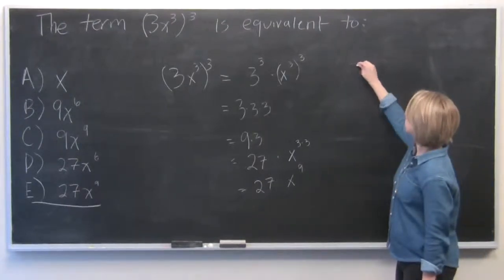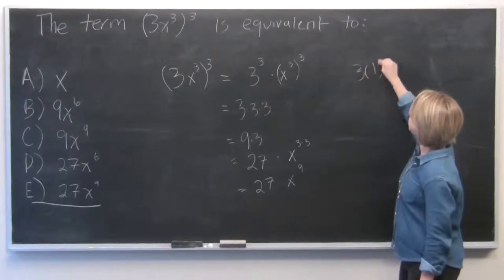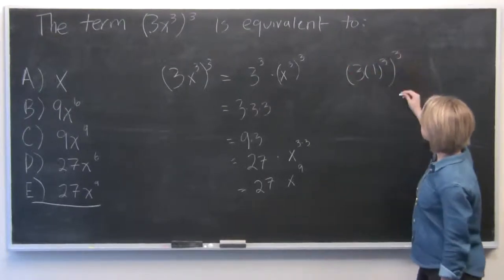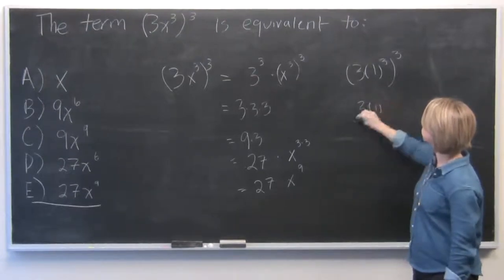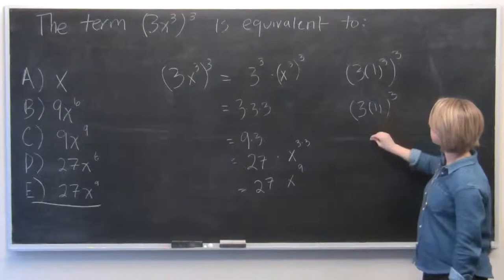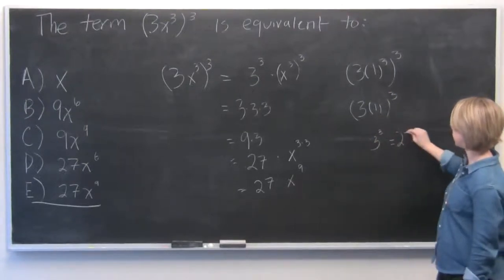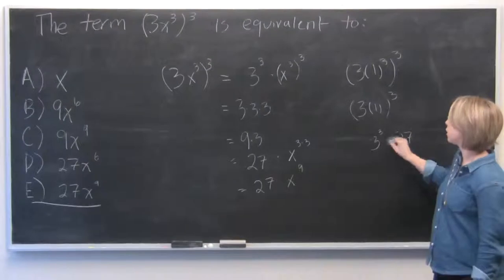So you can test that by saying (3 × 1³)³ is equal to 3³, which will be 27.